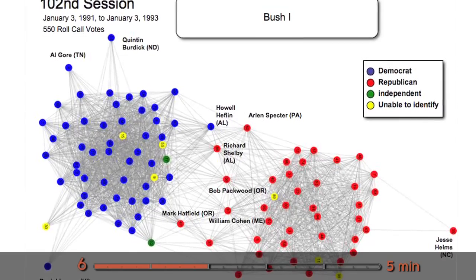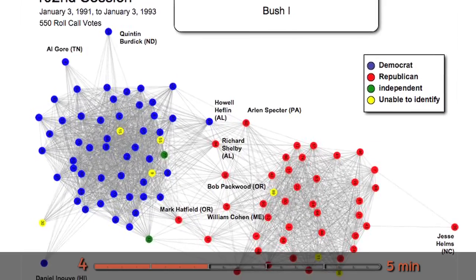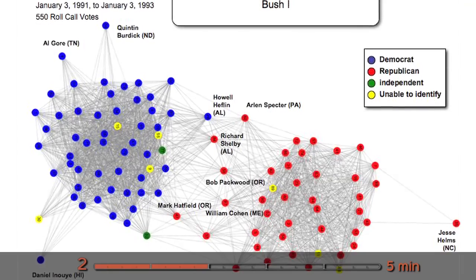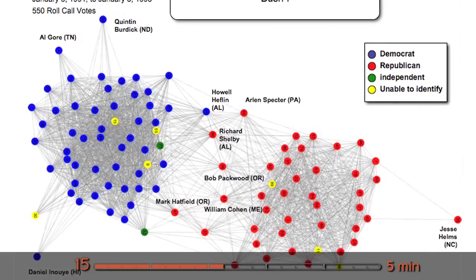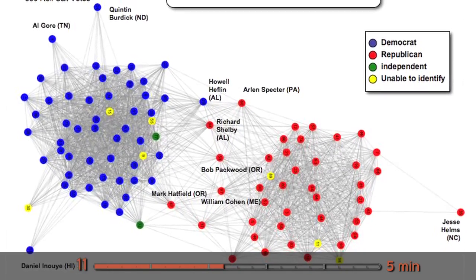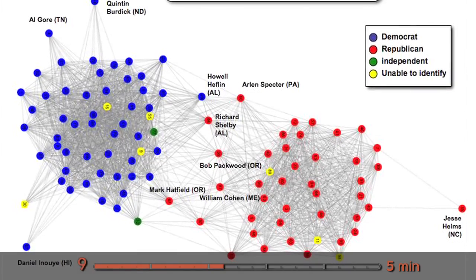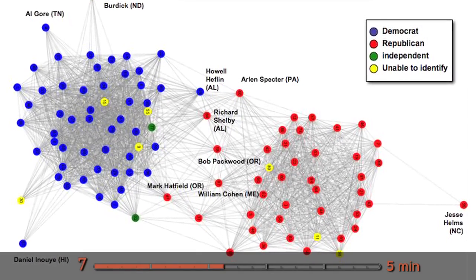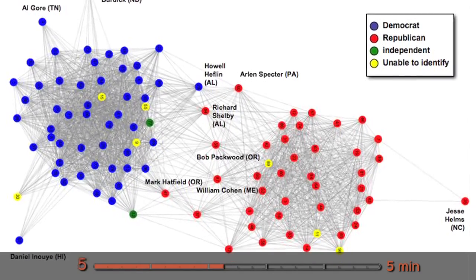The first Bush presidency is in this period. So you can see very clear structure - there's two kind of big groups. The blue on the left are the Democrats, the red on the right are Republicans. And in the middle you can see a dense network of cross-party voting. So that represents a good degree of bipartisanship that was happening at that period, or at least as a baseline.